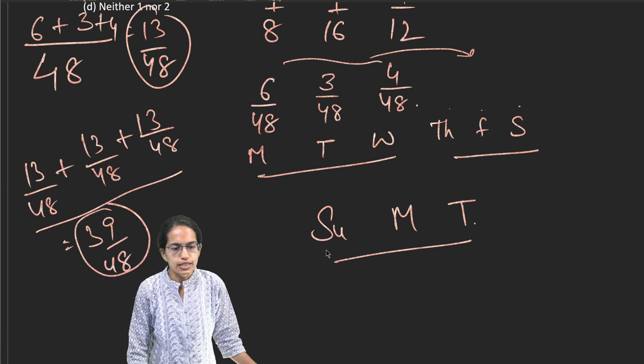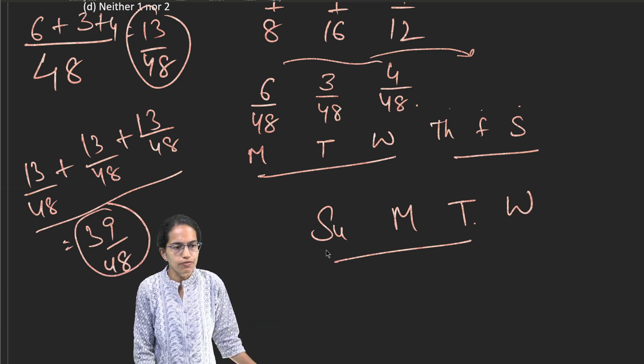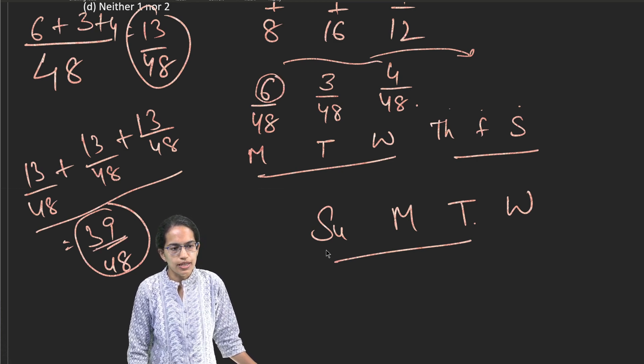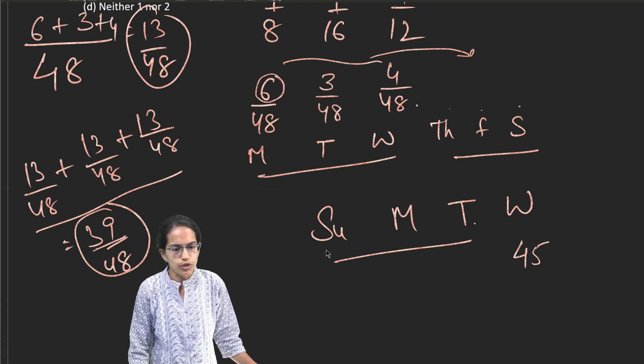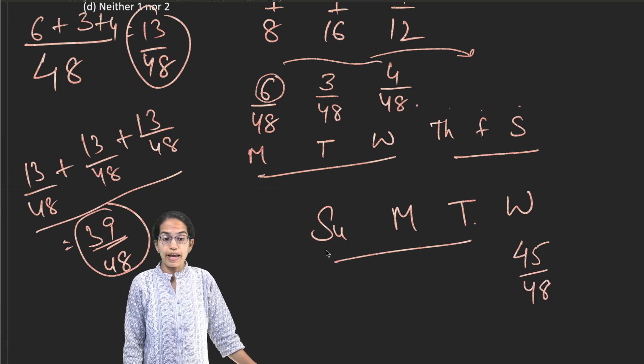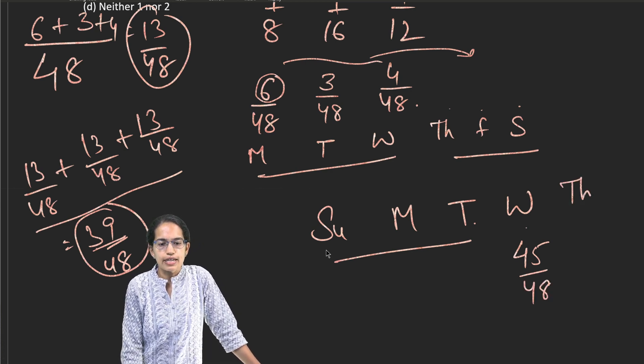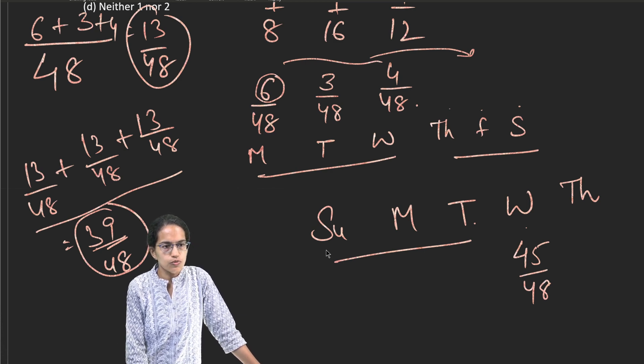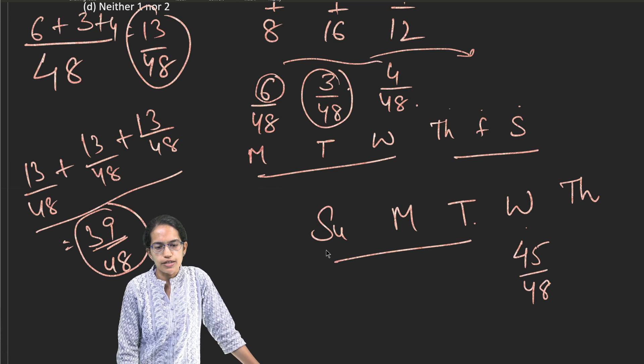So for Thursday, Friday and Saturday, this repeats. Then for Sunday, Monday and Tuesday, again this would repeat. So these 3 and these 3 and these 3 gives me how much? 39 by 48.